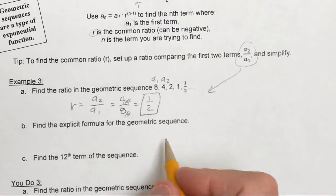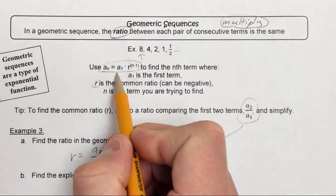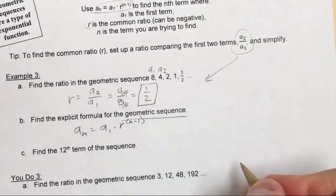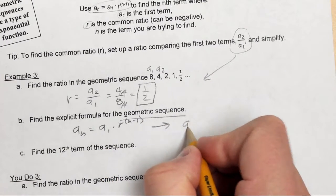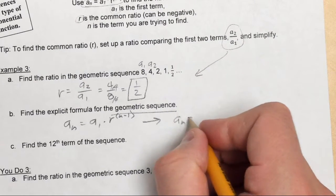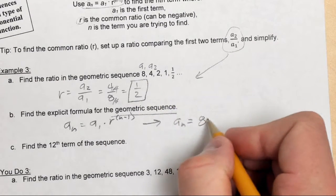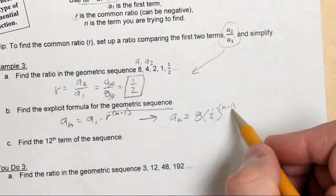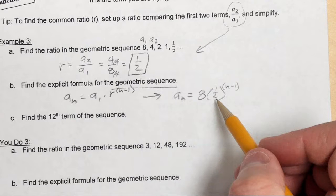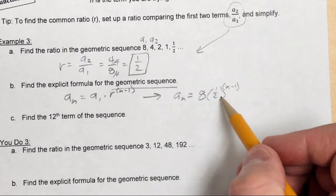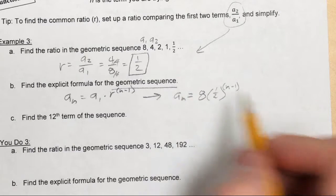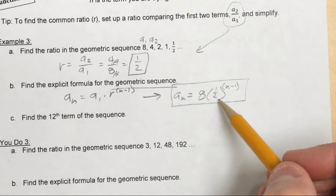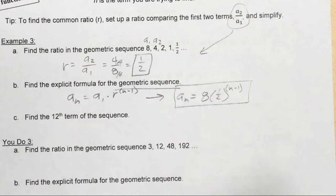To find the explicit formula for a geometric sequence, use a sub n equals a sub 1 times r to the n minus 1 power. In this case, a sub n equals 8 times one-half to the n minus 1 power. I'll add parentheses to indicate we're multiplying these together. This is the explicit formula because I'm only left with n's — I've plugged in the first term and the common ratio.